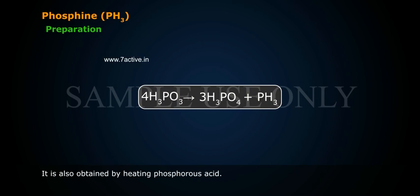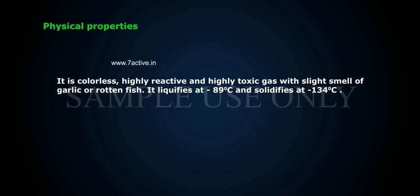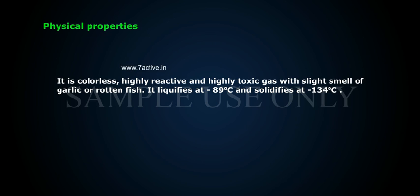It is also obtained by heating phosphorous acid. Physical Properties: PH3 is a colorless, highly reactive, and highly toxic gas with a slight smell of garlic or rotten fish. It liquefies at minus 89 degrees centigrade and solidifies at minus 134 degrees centigrade.